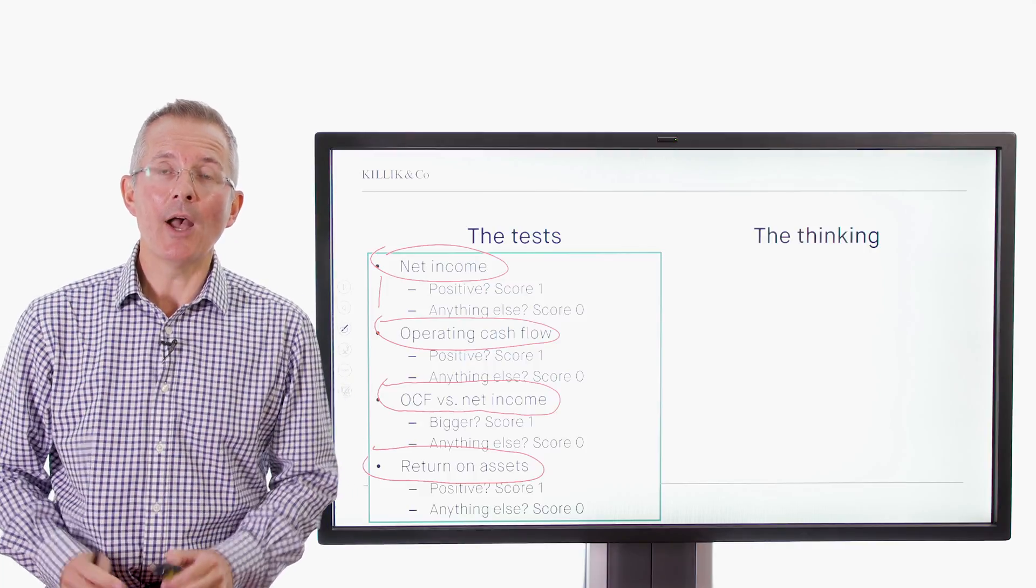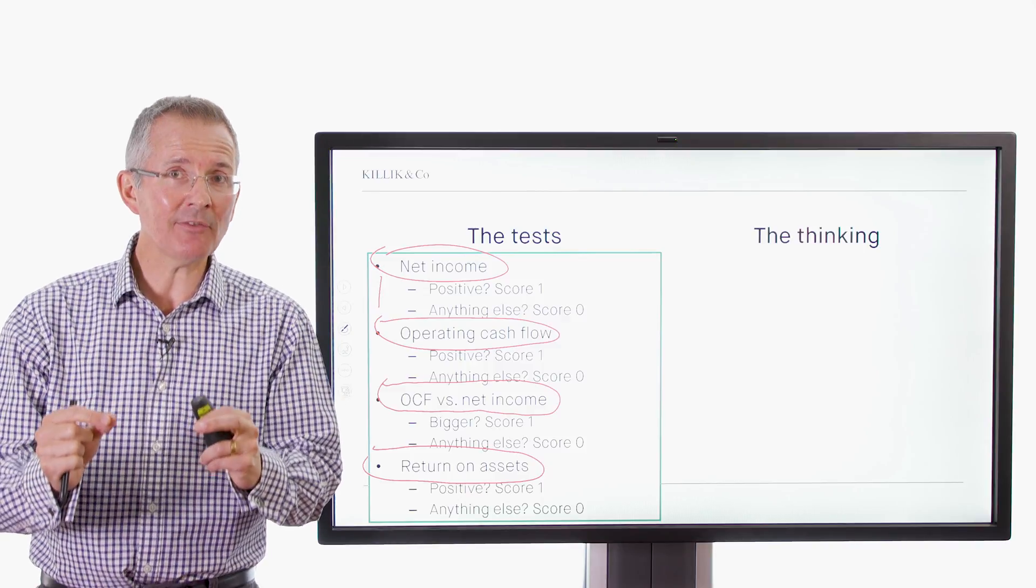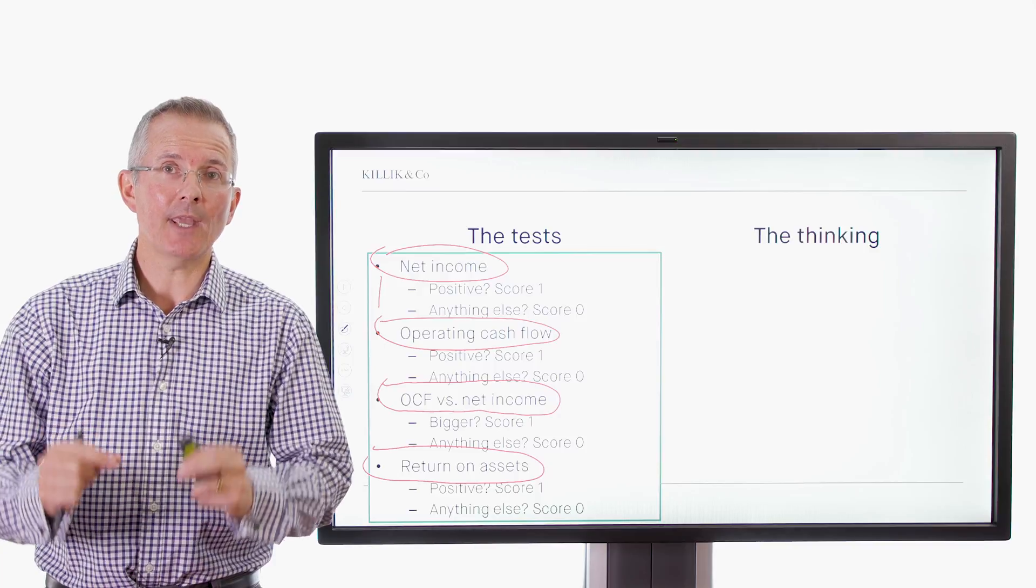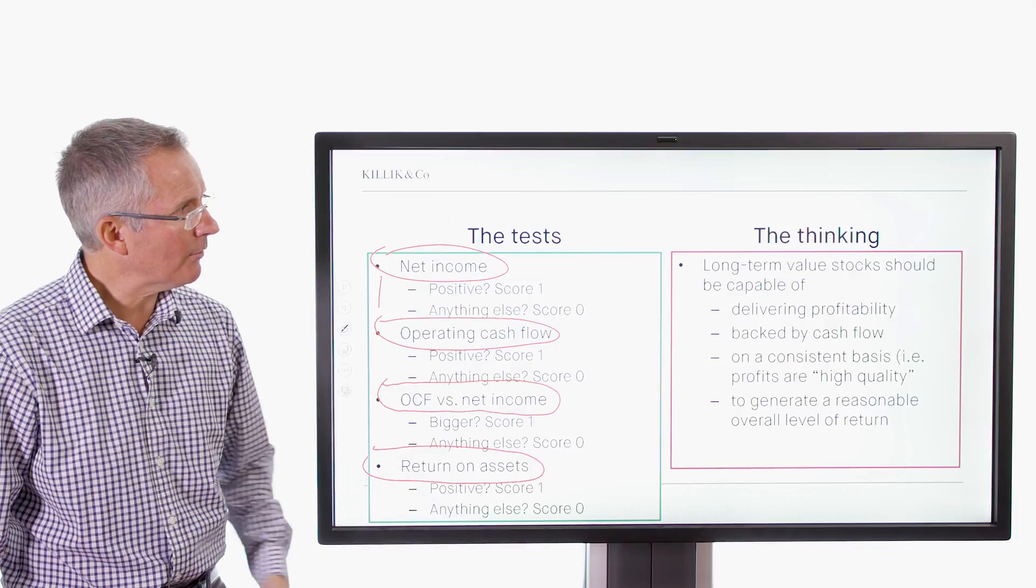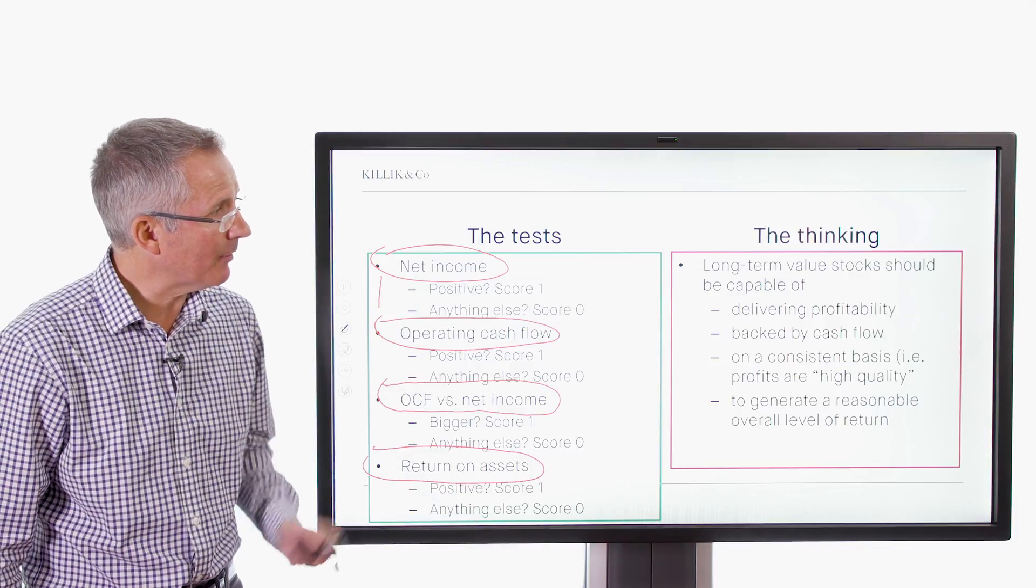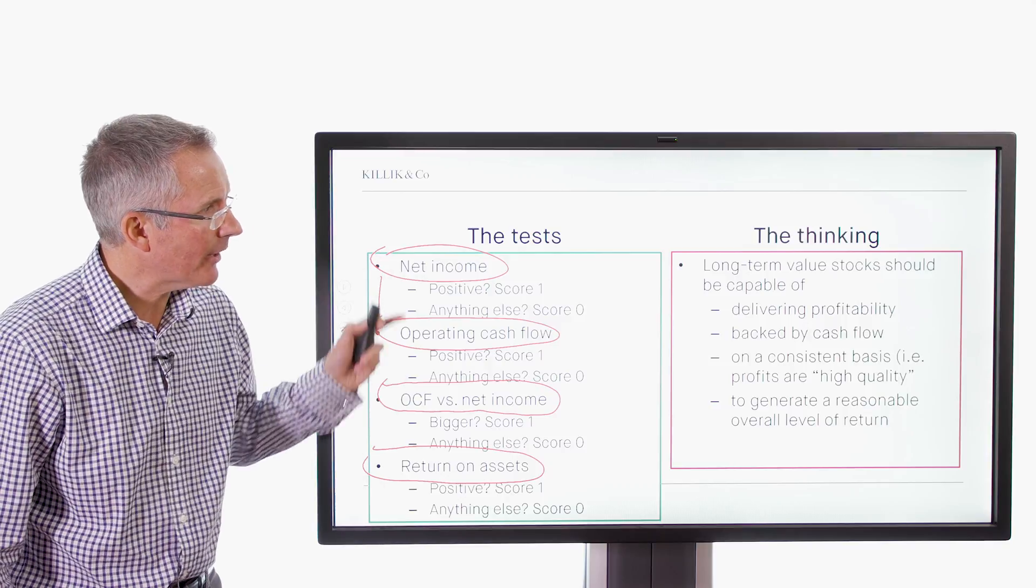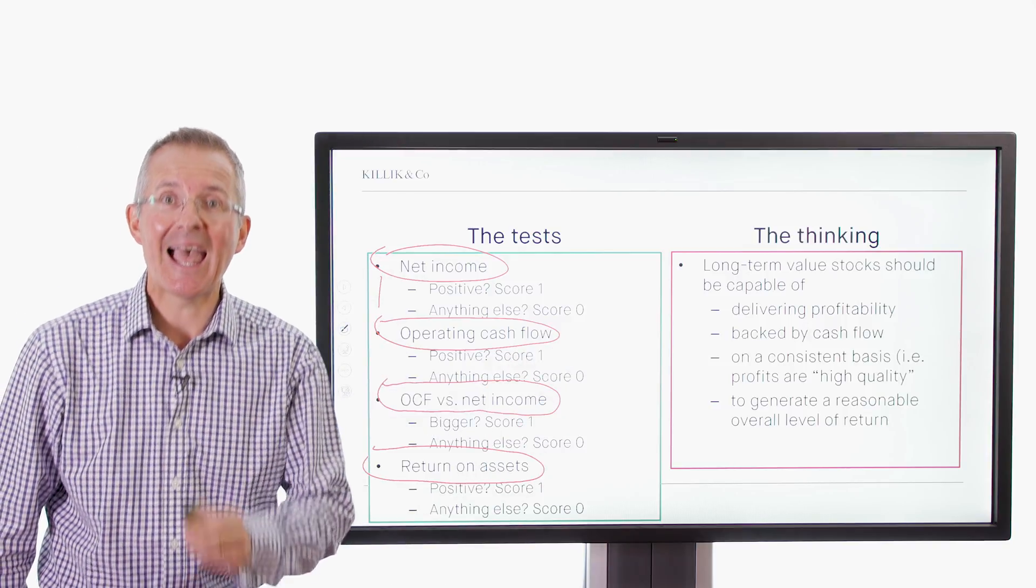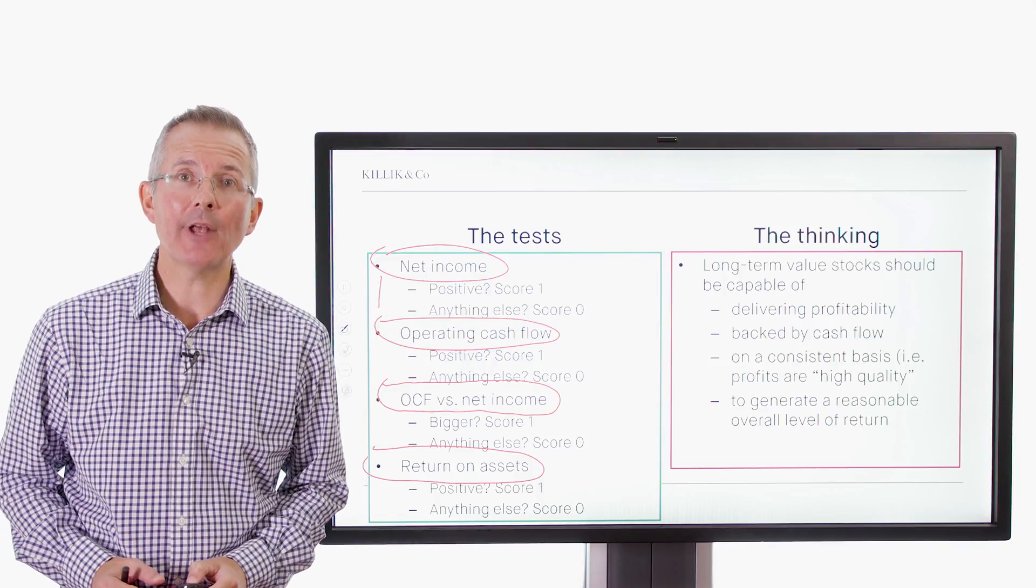So maximum score four on the profitability test, minimum score zero. And all Piotroski is doing is building a picture by asking a set of relatively simple questions, but also you require a bit of digging around to find the answers in the accounts and P&L and balance sheet and so on. The logic: long-term value stocks should be capable of delivering profitability, test one, backed by cash flow, test two and three, and generate reasonable overall level of return. As a result, test four. So that's the kind of story this is supposed to be telling you.